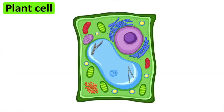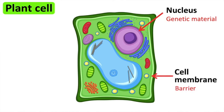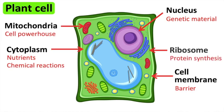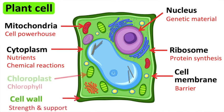Plant cells usually have a regular shape. They contain a nucleus, cell membrane, cytoplasm, mitochondria and ribosomes. However, they also contain other structures that are only found in plant cells. These include cell wall, chloroplast and vacuole.